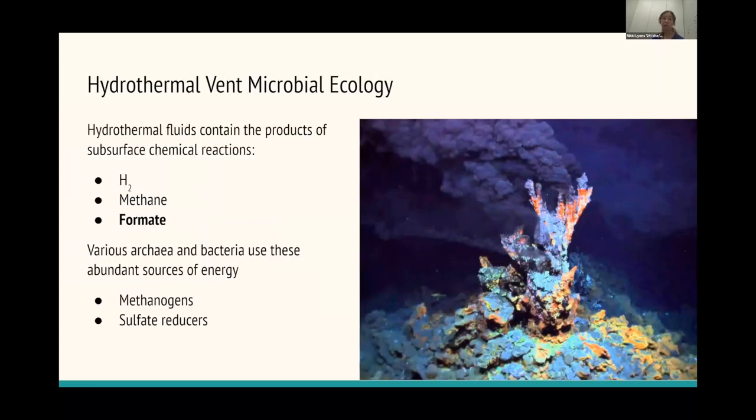And so this is important for our microbial ecology on the hydrothermal vents because there's an abundance of some chemicals that aren't really found in high abundances anywhere else. So things like hydrogen, methane, and of course formate, which we want to focus on for this project. So various archaea and bacteria are using these sources of energy and carbon for themselves to survive. So some examples would be methanogens and sulfate reducers as different taxa that we would be looking at.